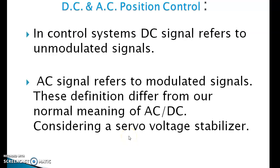Good afternoon to everybody, myself Arun Anjan Naik, HOD Electric and Electronics. Today I am going to discuss AC and DC position control of servomotors. In control systems, DC signal refers to unmodulated signals. AC signal refers to modulated signals. These definitions differ from our normal meaning of AC and DC. Let's consider a servo voltage stabilizer.